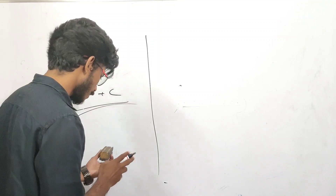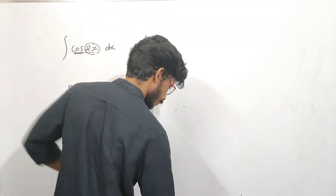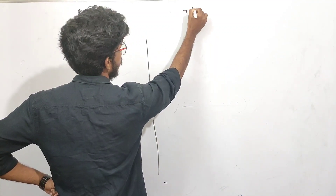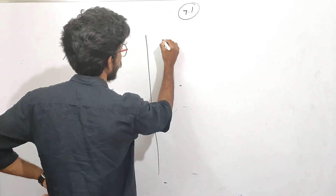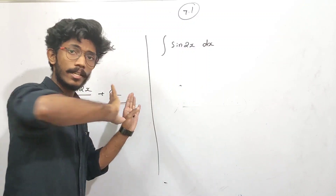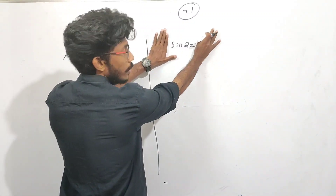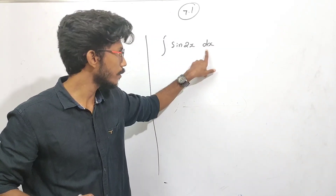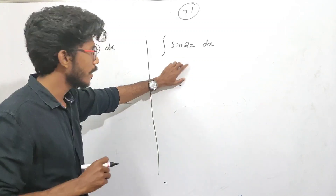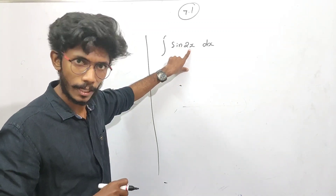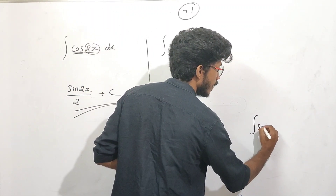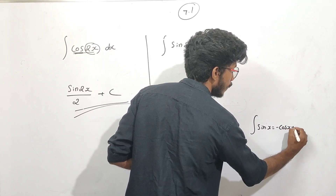Third question — I'm going to ask you about the text. You have to do exercise 7.1. First question: integral of sin 2x. If I ask you, I would ask you to find the integral of the following. The integral of sin 2x dx. What is the integral of sin x? Sin x dx is the integral of sin x — it is cos x plus c.